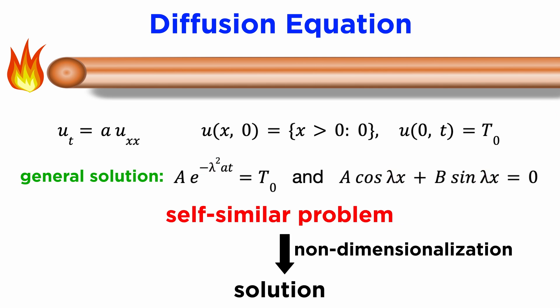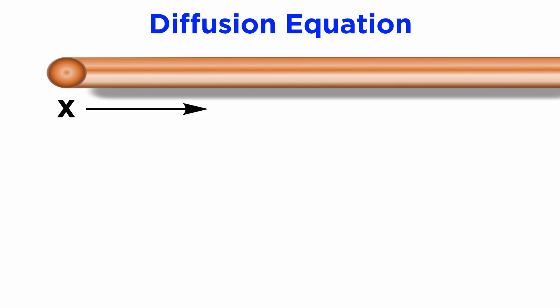This is called a self-similar problem, and it requires a useful technique called non-dimensionalization to solve. To start with, even though our semi-infinite rod problem doesn't seem to have an inherent length scale, let's just say it is the coordinate x, as this is the only thing we have. At this point, we should view x as an unknown variable.